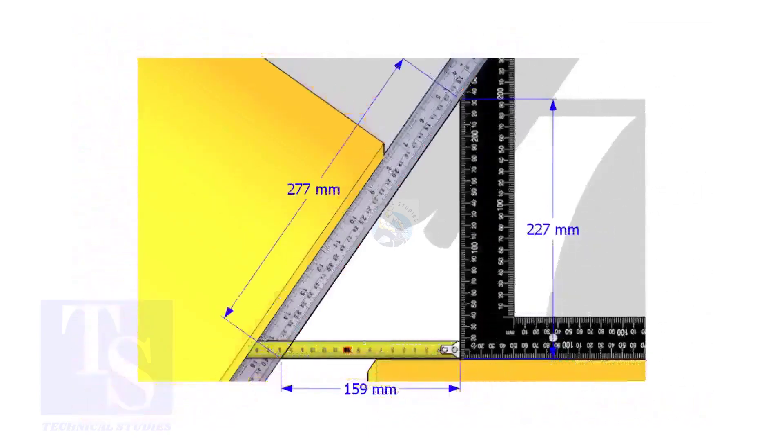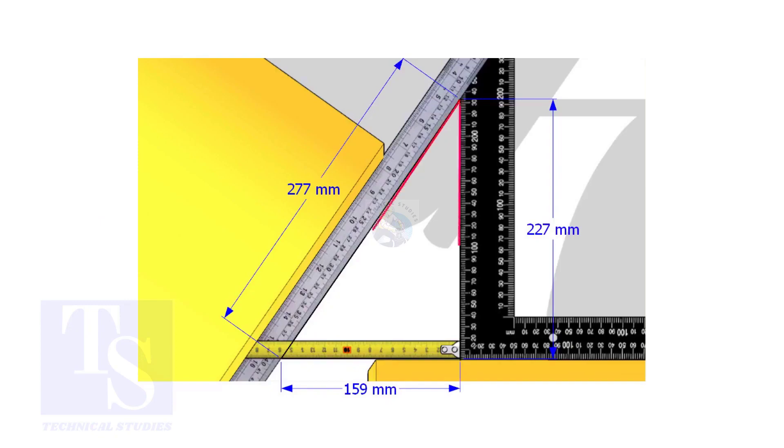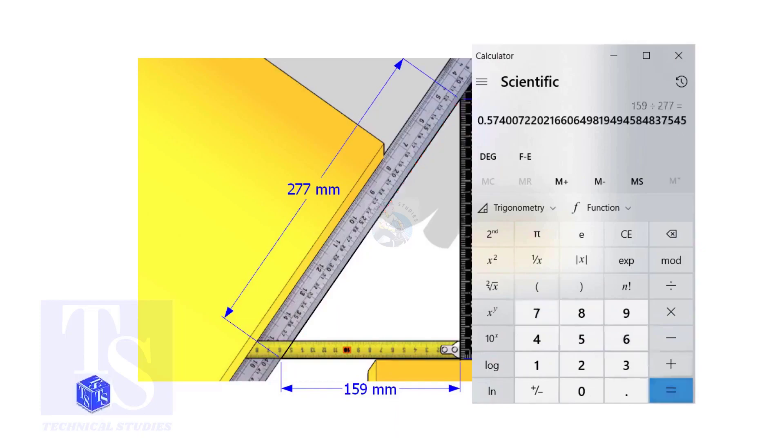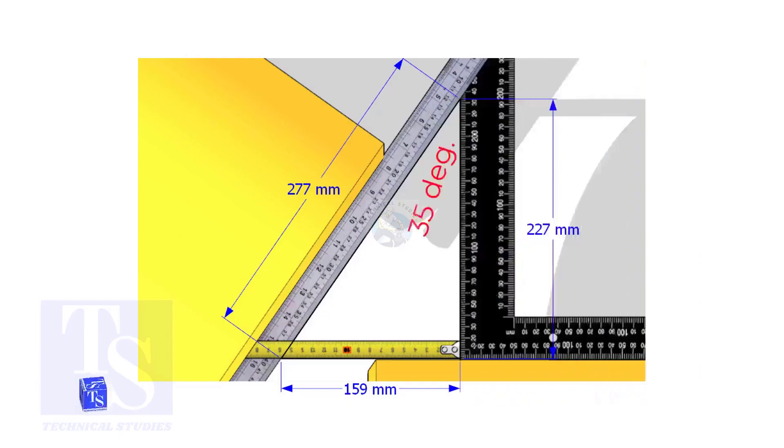Assume that these are the dimensions. Let us calculate the included angle. If you apply the sine rule, the angle will be 159 divided by 277, shift sine. So the answer is 35 degrees.